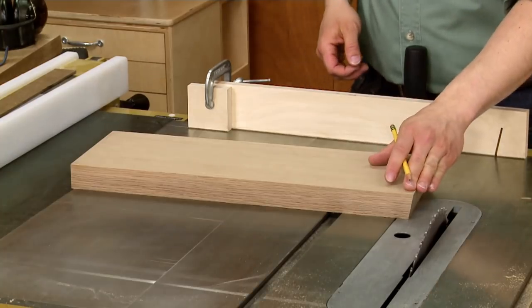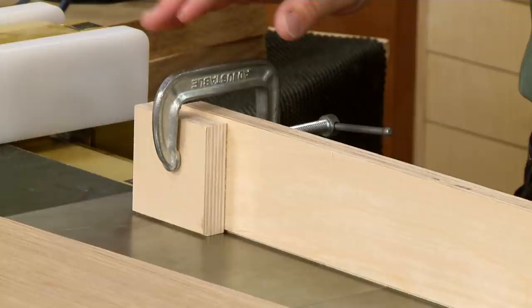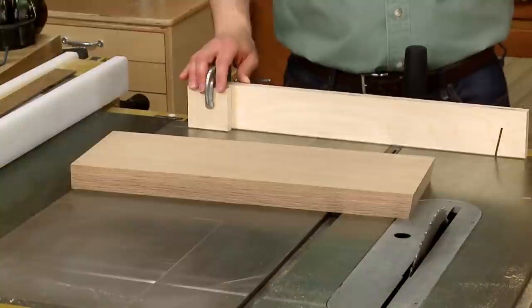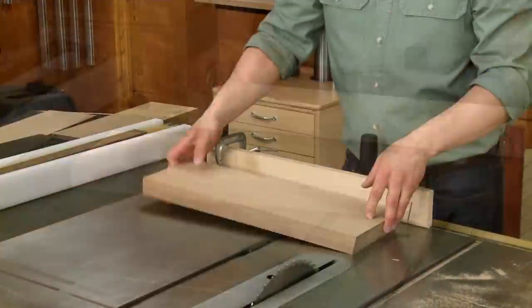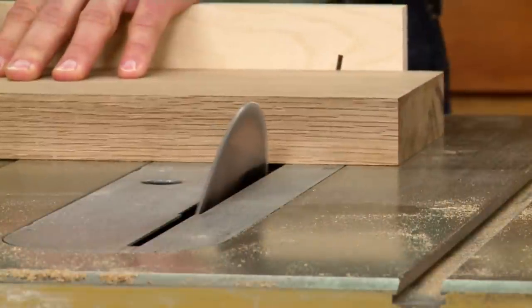That takes care of the first set of bevels. Now before I cut the bevels on the other end of the leg, I'm going to attach a stop block to the end of the miter gauge fence. Now this is going to make sure that all four legs are exactly the same length. To do this, I'm going to flip the board over and make the second cut.